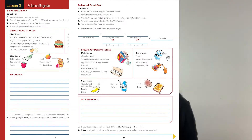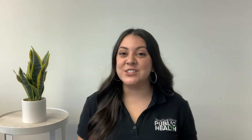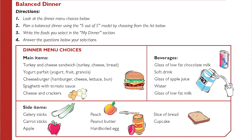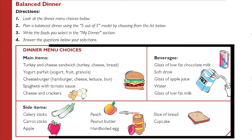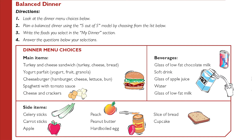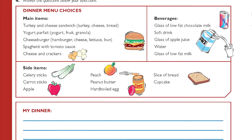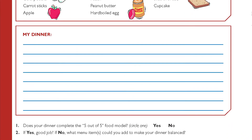Now we're going to go over the directions in your workbook. For this lesson, you all will need to complete pages 8, 9, and 10 in your workbooks, and remember to turn them in once you're done. We're going to look at the dinner menu choices, and you're going to plan a balanced dinner using the 5 out of 5 food model by picking items from the dinner menu. Once you've selected your items, write your items under the My Dinner section. Go ahead and press pause right here in the video to give you some time to select your dinner menu choices.